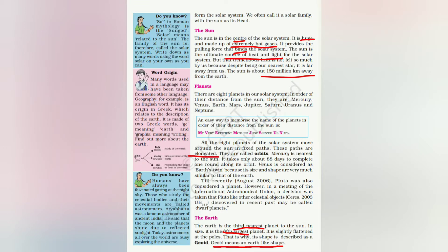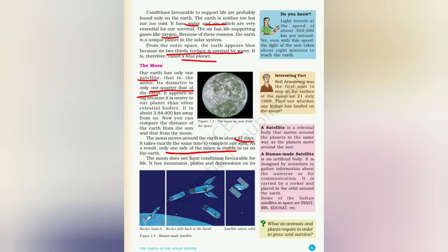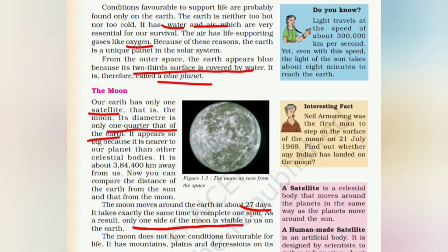The solar system comprises the sun, planets, and the earth. The sun is the center — it's huge, made of hot gases, and is the source of heat and light, binding the solar system. All planets revolve in an elongated orbit. Earth is the third nearest planet, the fourth largest, and has a geoid shape. Earth is favorable for life because of water, air, and oxygen. The moon is Earth's only satellite, one quarter the size of Earth, and takes 27 days to revolve around it — which is why only one face is visible.